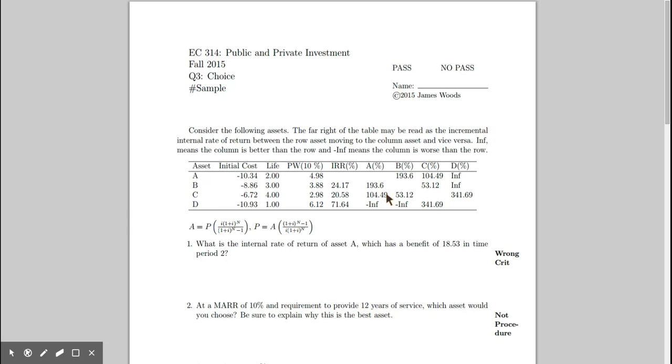The part that's different between the two of them are these infinities over here. And so you'll notice that if you have a positive infinity, it just means the column is better than the row, as stated way up here.